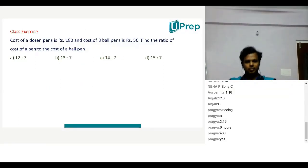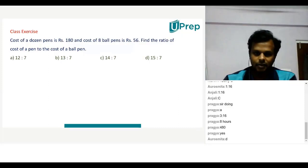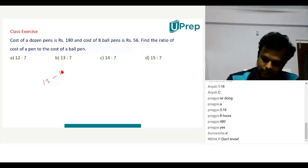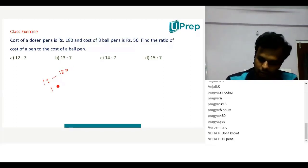Now try this. Cost of dozen pens is Rs. 180 and cost of eight ball pens is Rs. 56. Find the ratio of cost of a pen to a ball pen. Okay, yes. So children, dozen means what? 12 pens, right? The cost of 12 pens is 180.